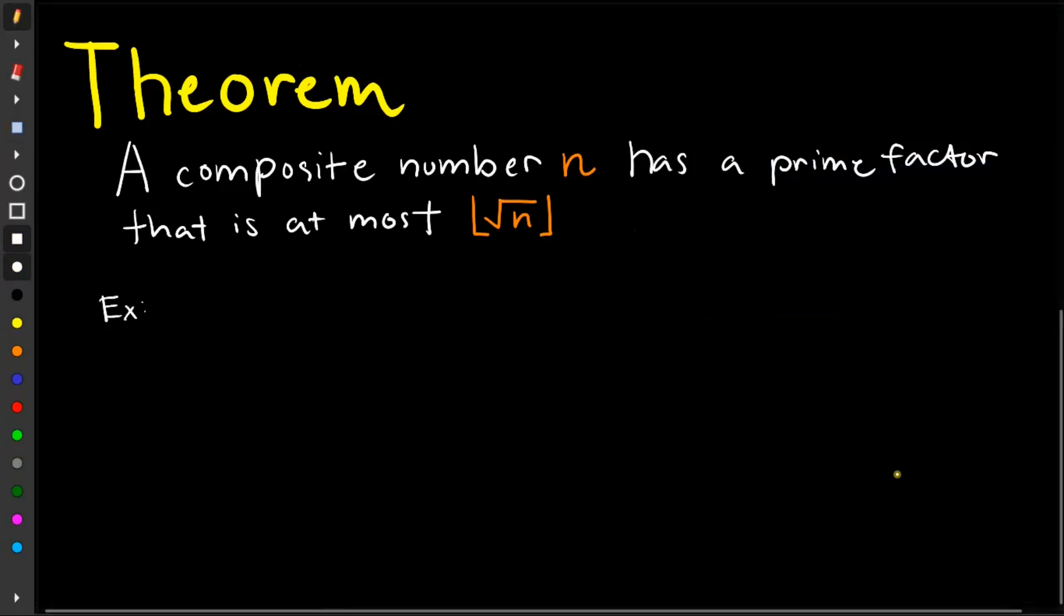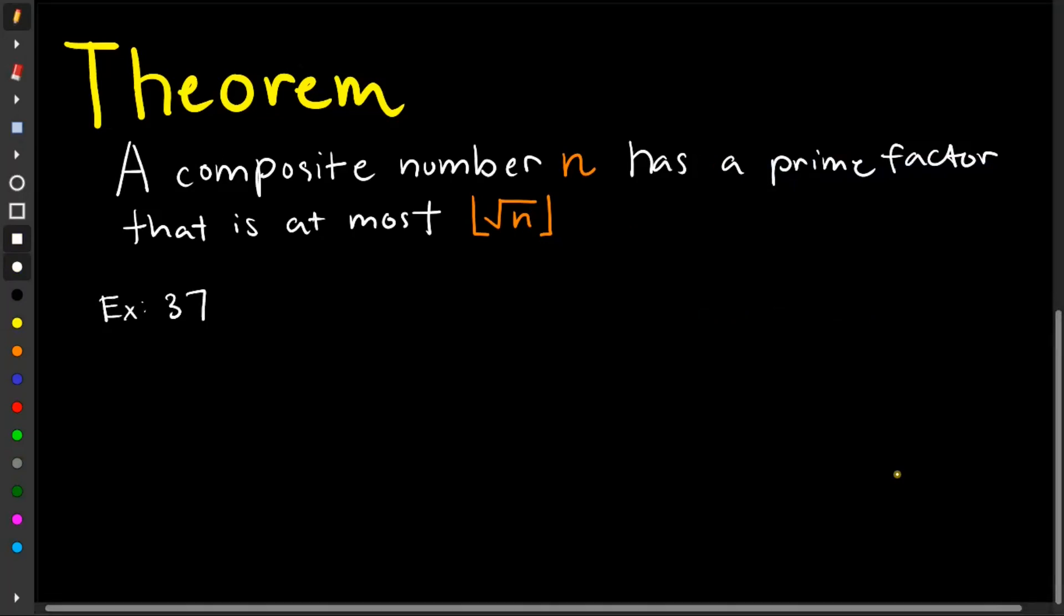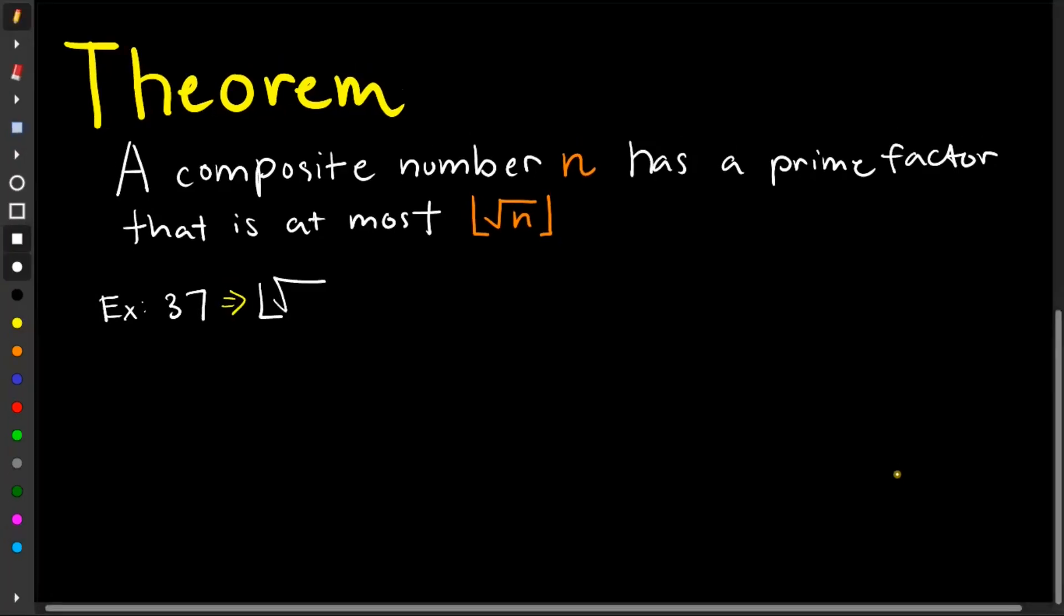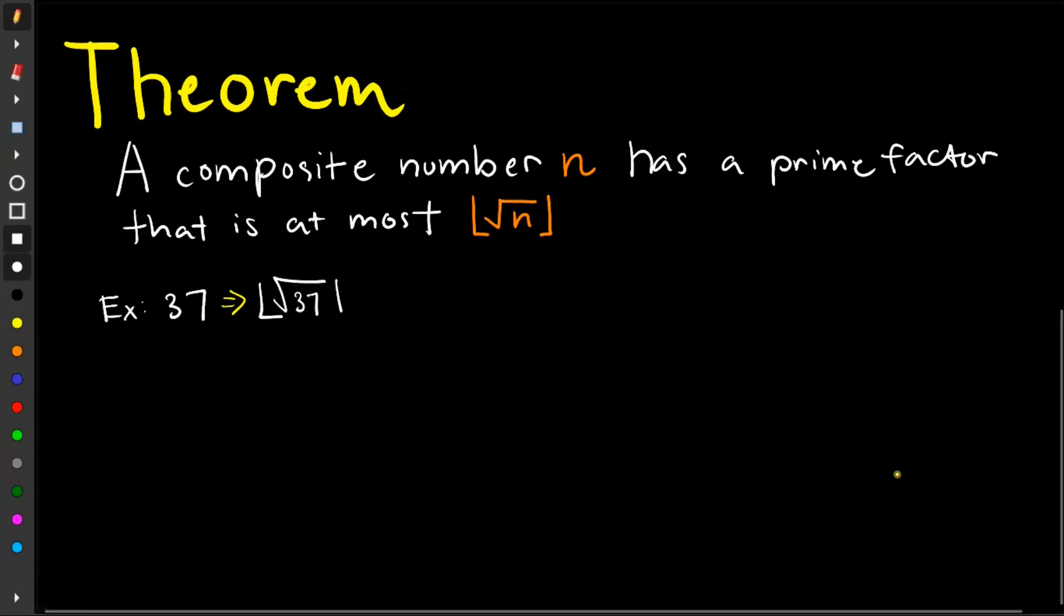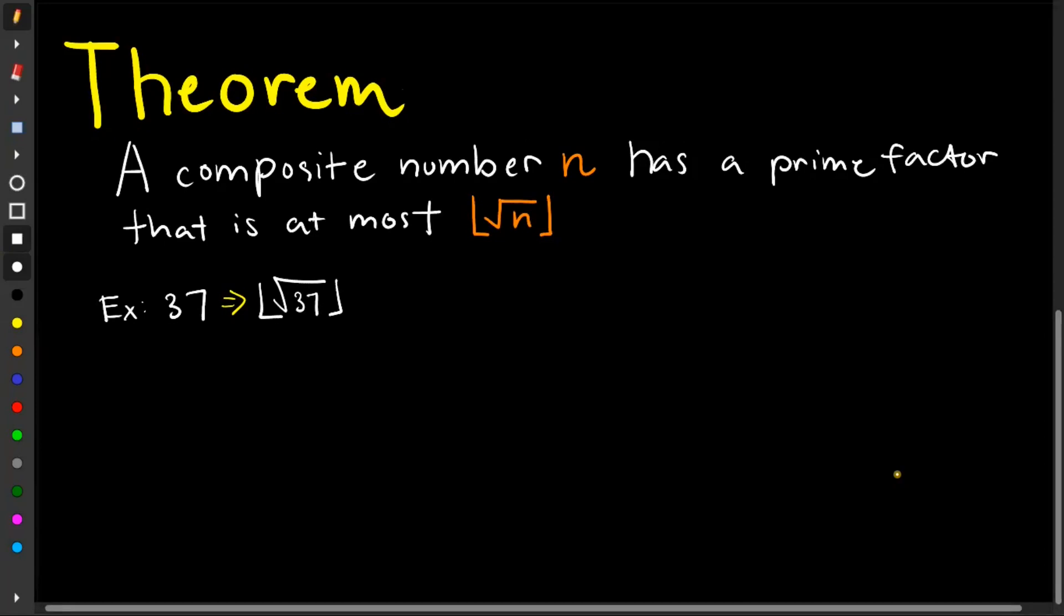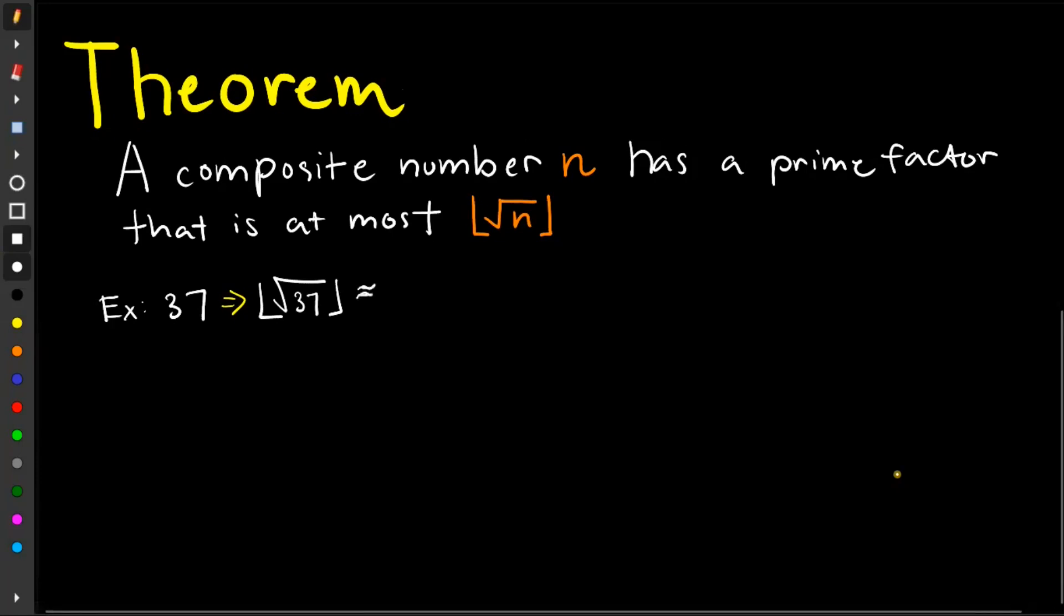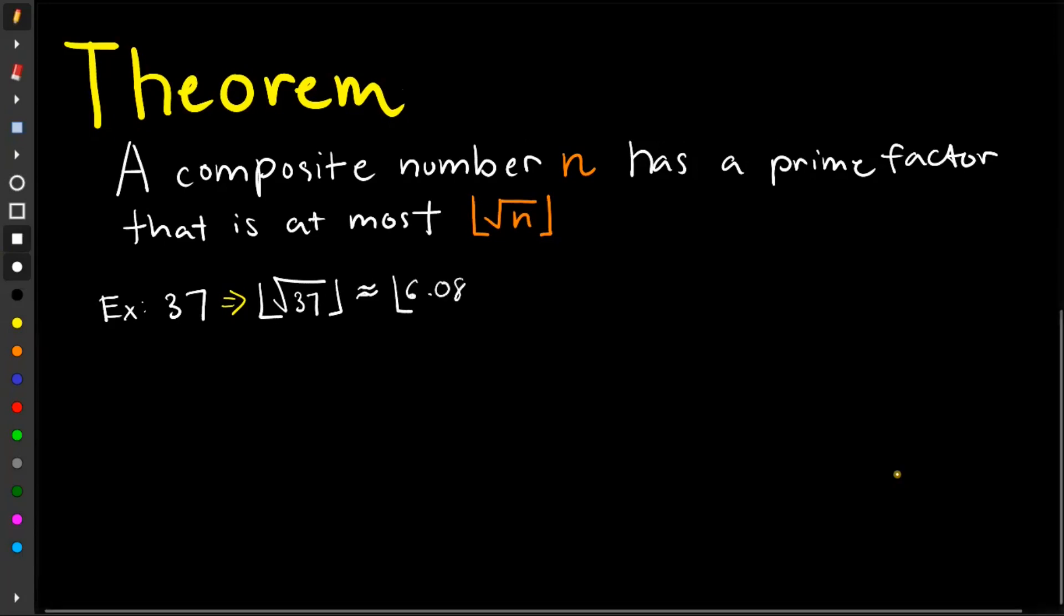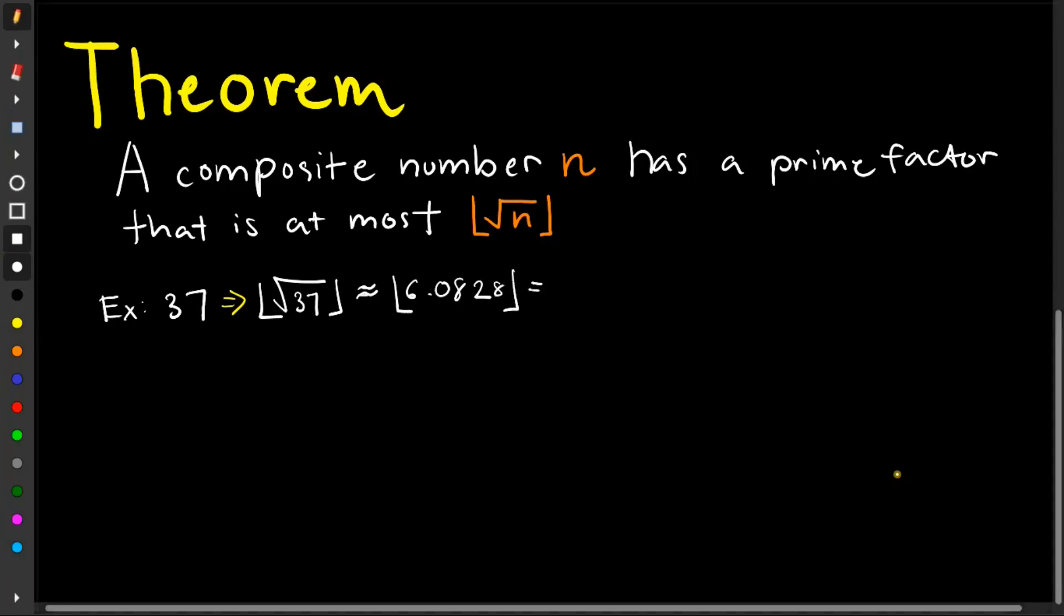So let's have, say we have 37 and we are to determine if this one is prime or composite. So first, applying the theorem, we have the square root, we take this one as n, so we have square root of 37, the floor of 37. We're going to use the approximate symbol, since we're dealing with decimals here. So it is approximately 6.0828, which, like the floor function, is 6.